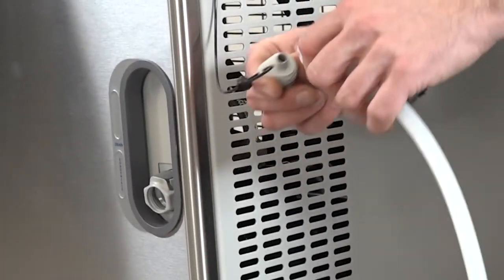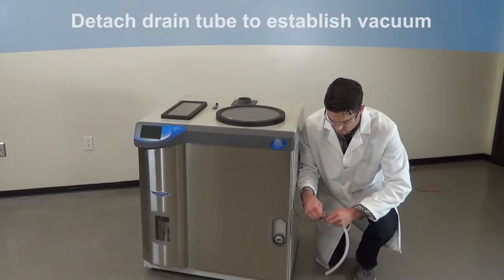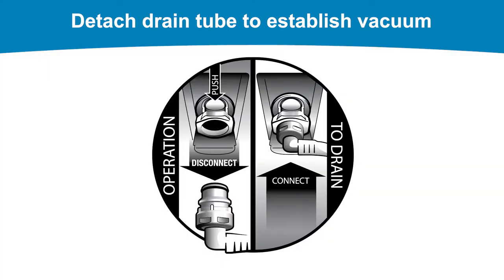Attach your drain tube to the drain fitting. The drain fitting is only inserted when draining the collector. To establish vacuum, disconnect the drain tube fitting.